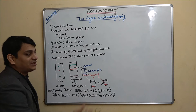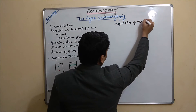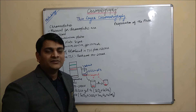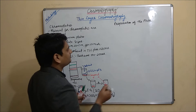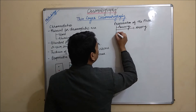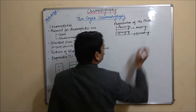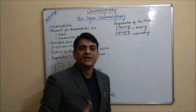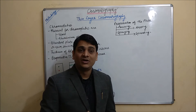Now coming to the preparation of the plate. The TLC plate is prepared by using four methods: pouring, dipping, spraying, and spreading. In the pouring method, first we have to make a slurry, and the viscosity of the slurry should be optimum — it should not be much diluted or much thick.